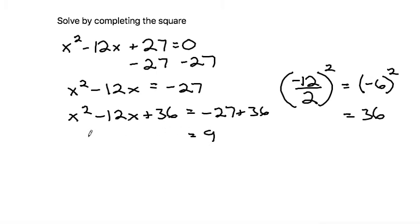So you take this negative 6 and we can factor this into x minus 6 times x minus 6. Both factors are x minus 6. That's why we call it completing the square, because now we've made it into x minus 6 squared equals 9.